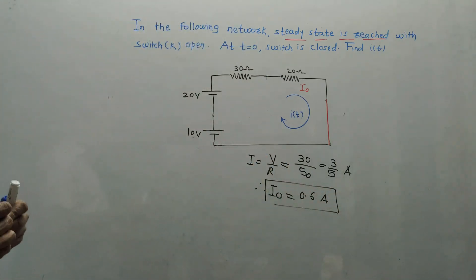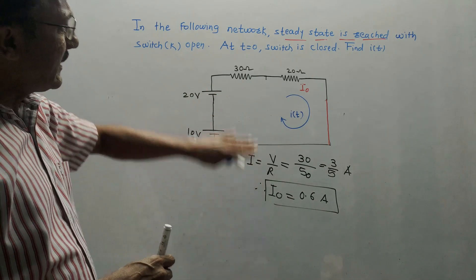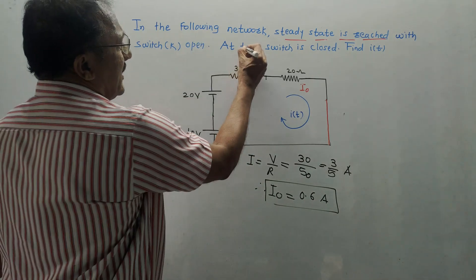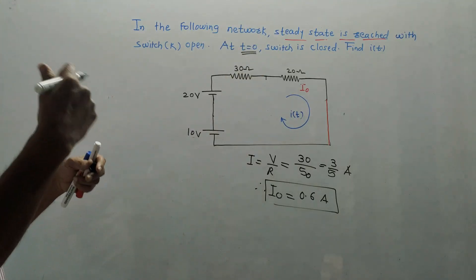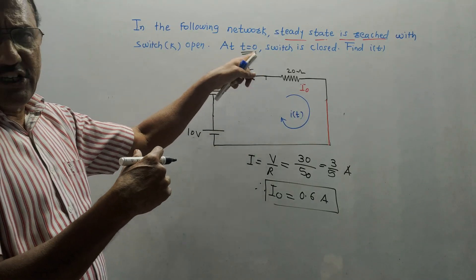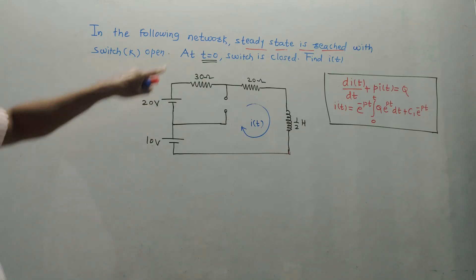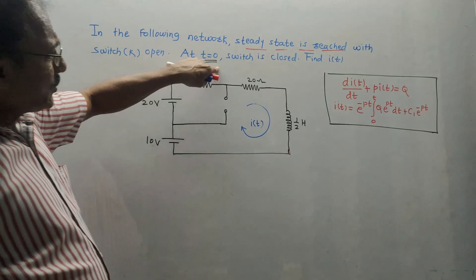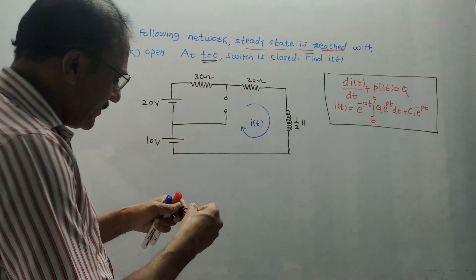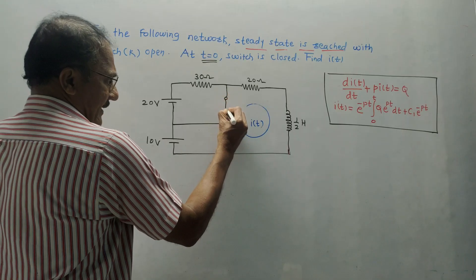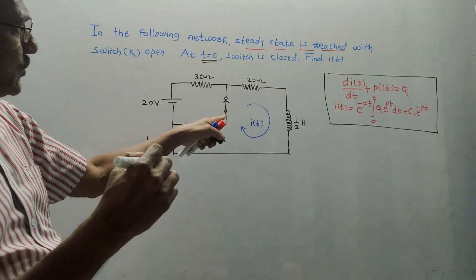Now in the next step — step 1 was calculating initial current. In step 2, we consider the condition T equals 0. At T equals 0, switch is closed. Referring to the original diagram, switch is closed, so I will show it directly connected.